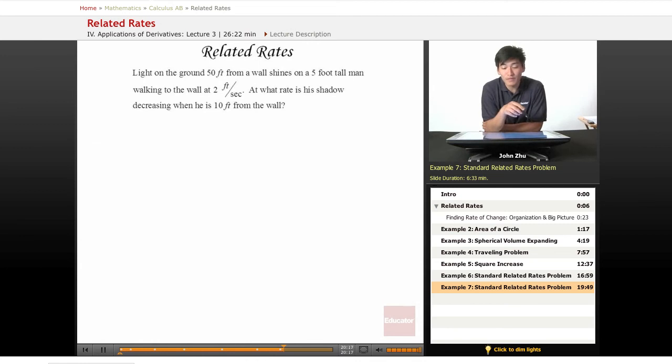Light on the ground, 50 feet from a wall, shines on a five foot tall man walking to the wall at two feet per second. At what rate is his shadow decreasing when he is 10 feet from the wall?